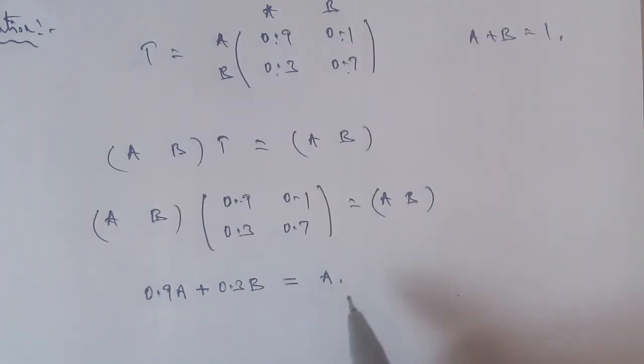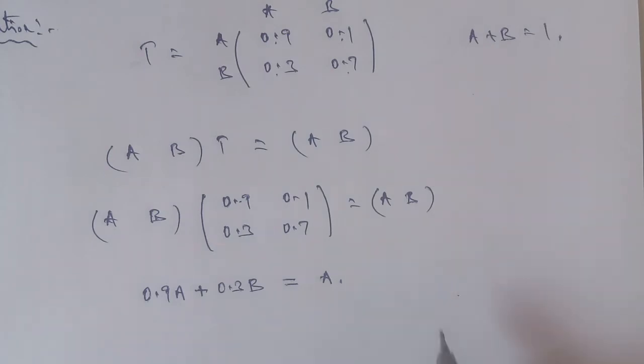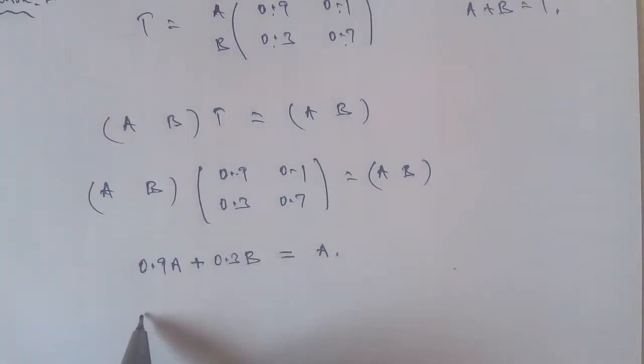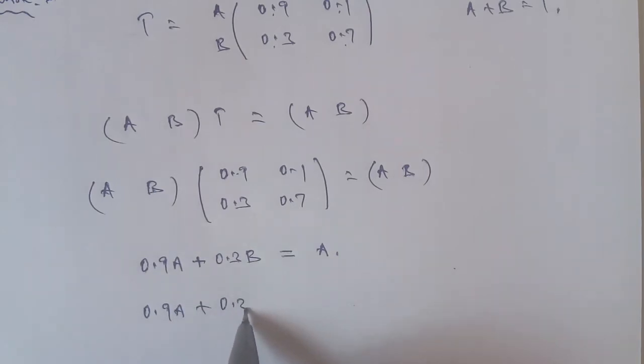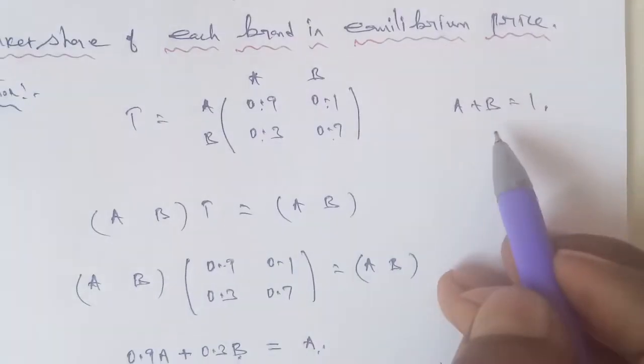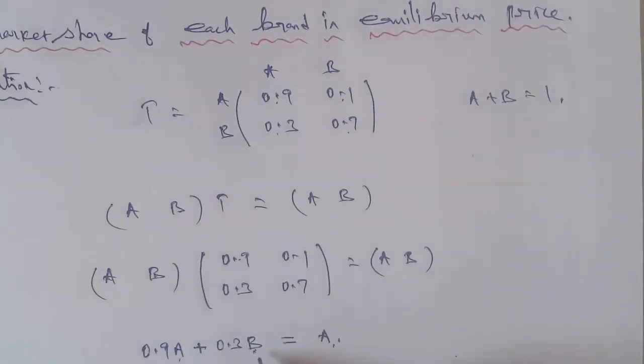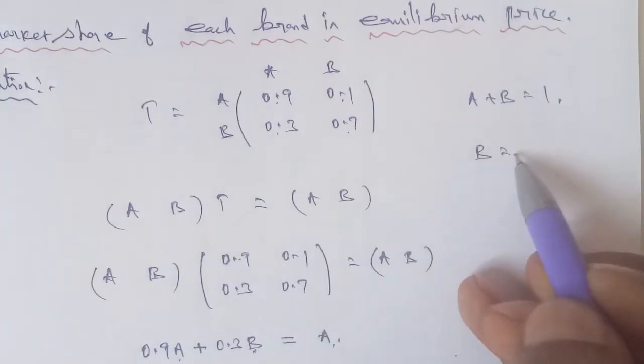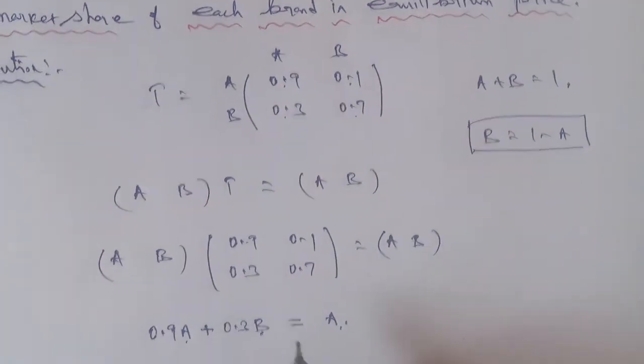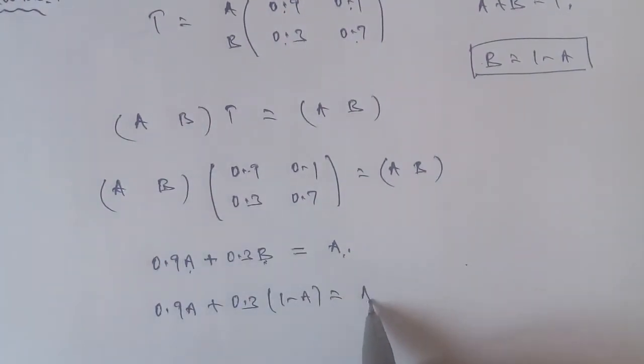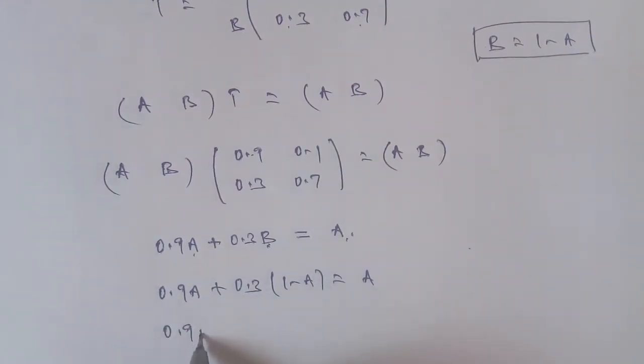First row second column equals B. If we substitute, 0.9A plus 0.3B equals A. Here is A term, here is B term. A plus B is equal to 1, so B is equal to 1 minus A. Substitute this entry: 0.9A plus 0.3 times (1 minus A) equal to A.